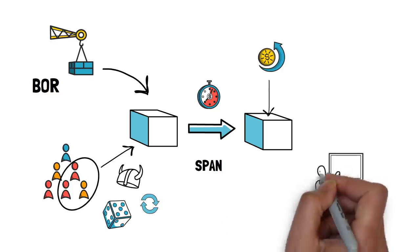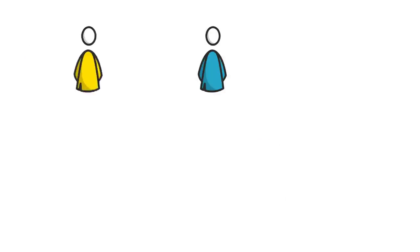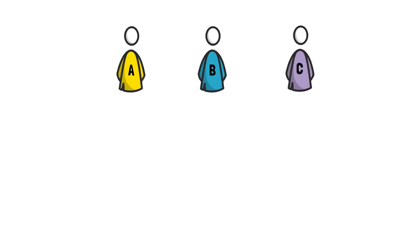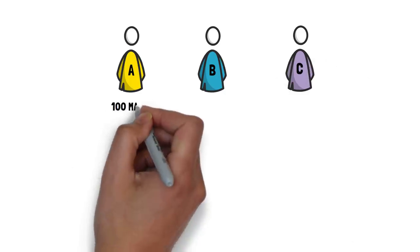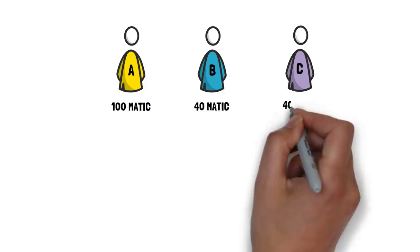Let's have a closer look at the process of selecting block producers. Let's suppose we have three validators in the pool and they are Alice, Bill and Clara. Alice staked 100 MATIC tokens, whereas Bill and Clara staked 40 MATIC tokens each.